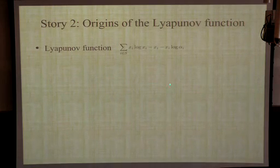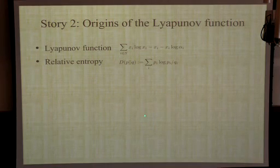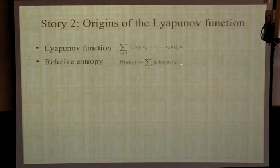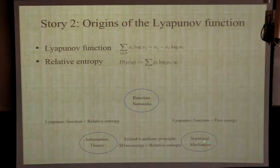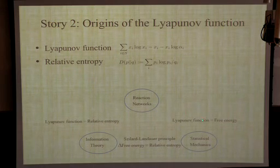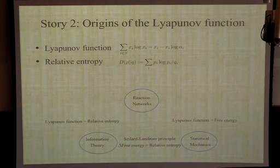Story 2: origins of the Lyapunov function. The Lyapunov function for reaction networks looks like sum of (xi log xi - xi - xi log alpha_i), and relative entropy looks similar — a quantity very familiar if you've done anything related to information theory. One might wonder: is this some kind of free energy function, and what is its information-theoretic interpretation? There is a well-known connection between statistical mechanics and information theory relating free energy to relative entropy. The suspicion is that the Lyapunov function is something like free energy, and we will show this can be made precise.